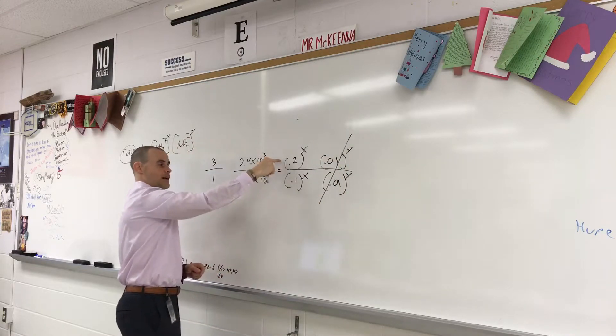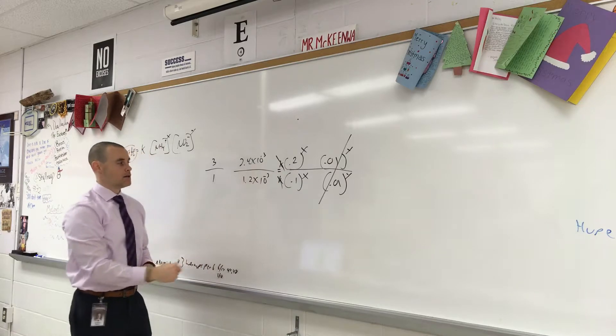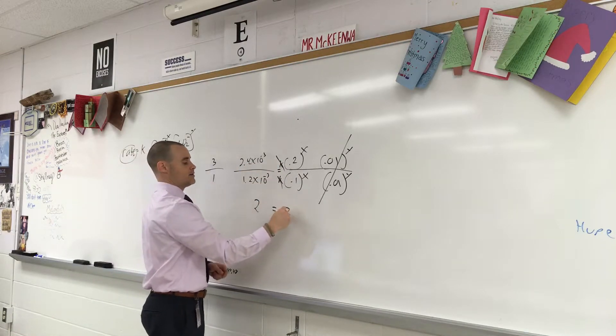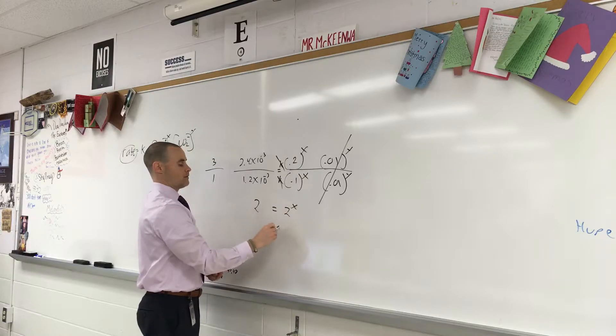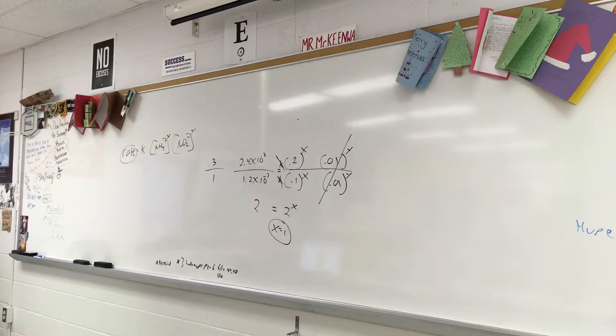That cancels. I didn't, I guess I should put them in. There's my k values. They cancel. This divided by this is 2. This divided by this is 2. So x must be 1. That's where we left off, right? Yep. Questions? No.